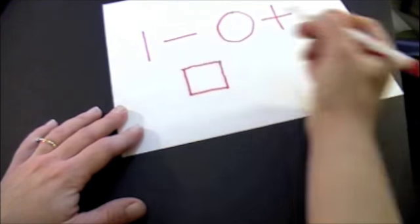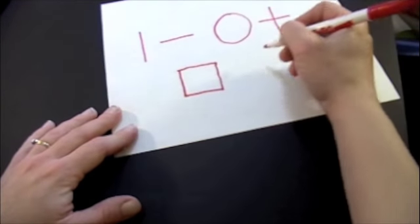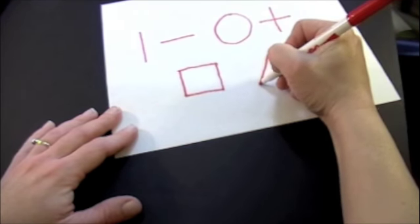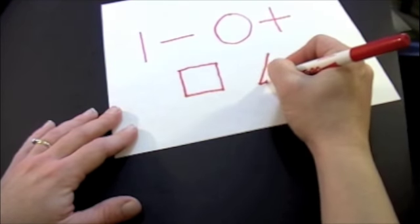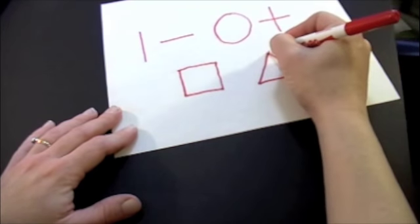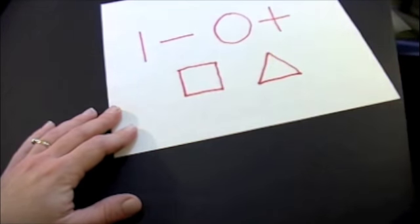Now it'll be a triangle. Start at the top, big diagonal line slides down to the corner, big line across, big diagonal slides back to the top. That's a triangle. There it is, the developmental sequence.